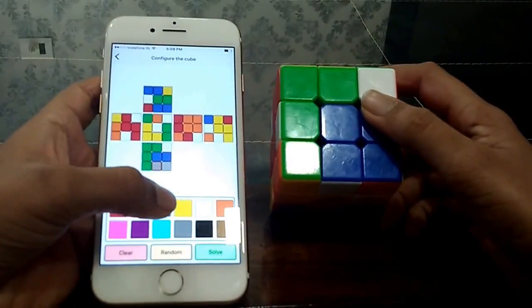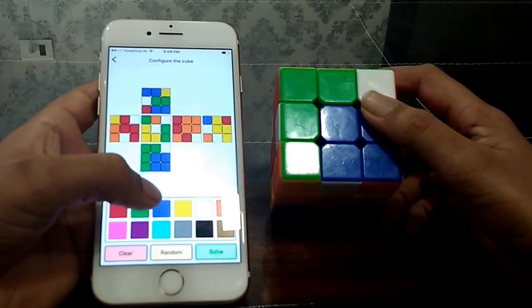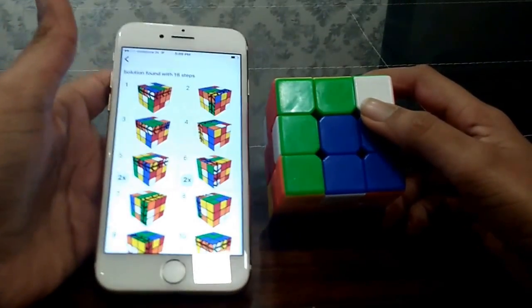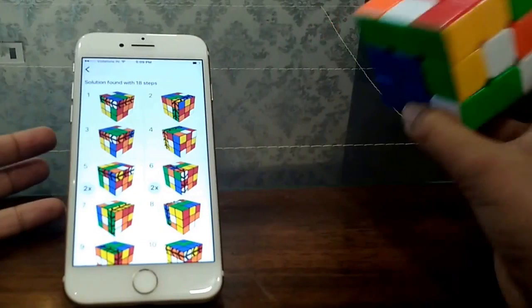Okay, blue, blue. Now let's solve the Rubik's Cube. Solution found with 18 steps. Let us perform.